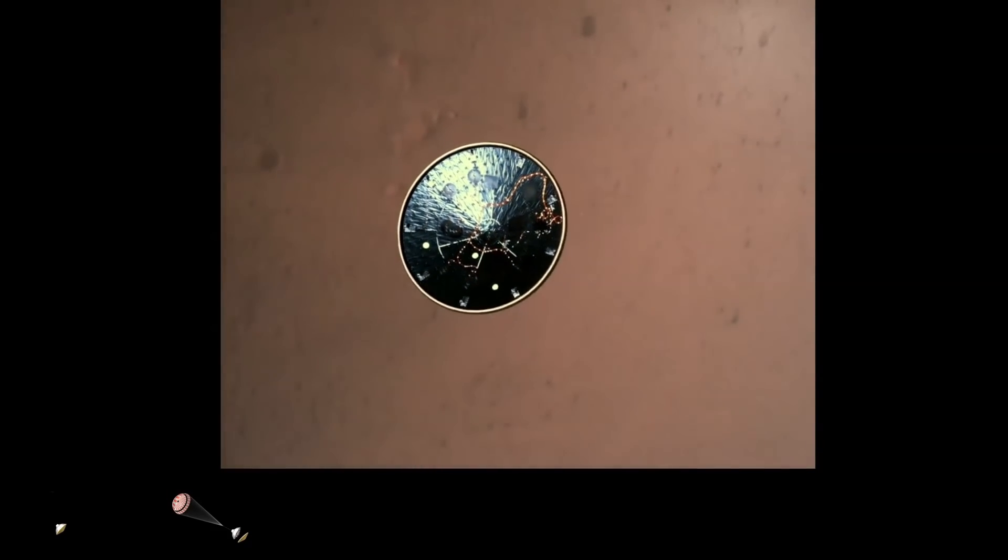Heat shield separated. Perseverance has now slowed to subsonic speeds and the heat shield has been separated. This allows both the radar and the cameras to get their first look at the surface. Current velocity is 145 meters per second at an altitude of about 9.5 kilometers above the surface.